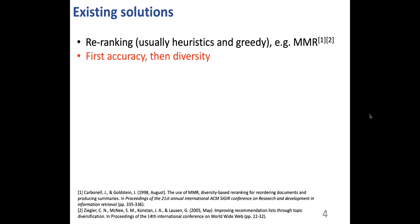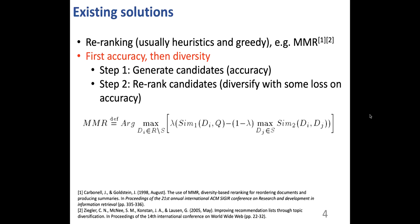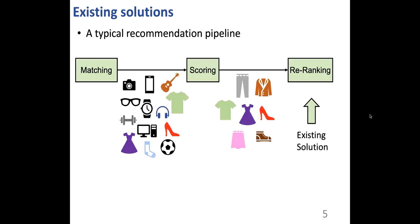Existing re-ranking methods, like MMR, usually follow a first accuracy, then diversity strategy. In step one, candidate items are generated with accuracy as the only target. And in step two, those candidates are re-ranked for diversity. For example, the MMR score is calculated after generating candidates. In re-ranking-based diversification approaches, accuracy and diversity are decoupled. Here is a typical recommendation pipeline which has three stages of matching, scoring, and re-ranking. Existing solutions perform diversification in the last stage, re-ranking.